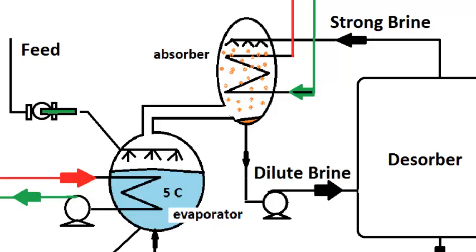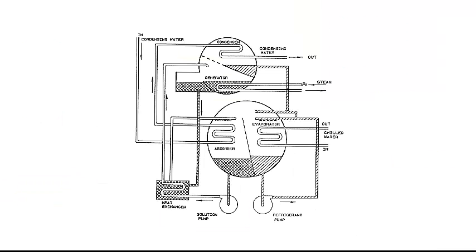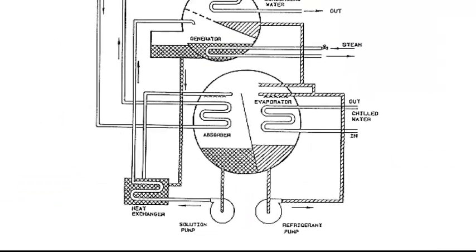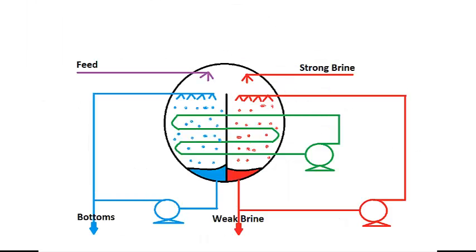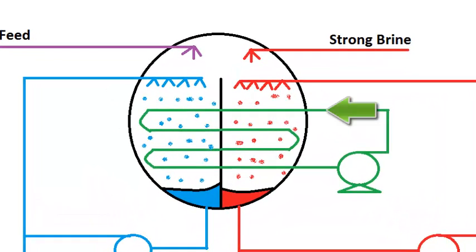Conceptually, it is helpful to show the evaporator and absorber as two separate units. But since they operate at the same pressure, absorption chiller manufacturers often contain the two pieces of equipment within the same vessel, separated only by a baffle. We could borrow this idea and make an evaporator-slash-absorber pair with shared heat exchange coils.